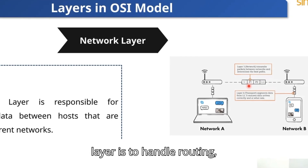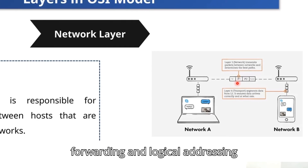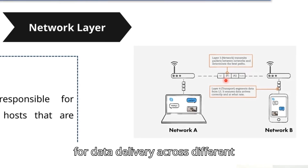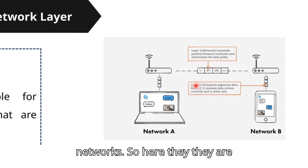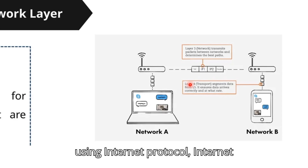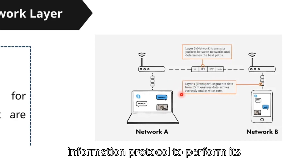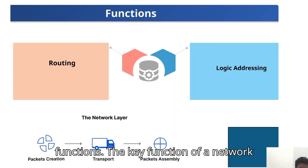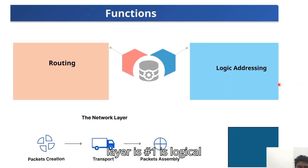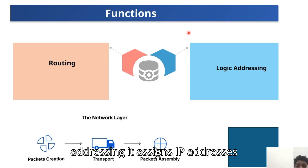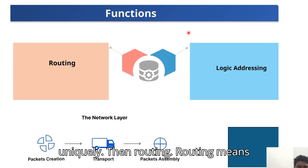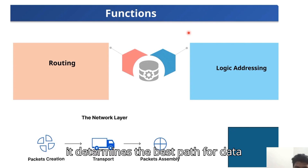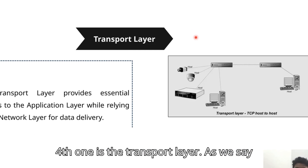The Network layer's main purpose is to handle routing, forwarding, and logical addressing for data delivery across different networks. It uses protocols such as Internet Protocol (IP), Internet Control Message Protocol (ICMP), and Routing Information Protocol (RIP). Key functions include logical addressing — assigning IP addresses to identify devices uniquely — and routing, which determines the best path for data packets to reach the destination.